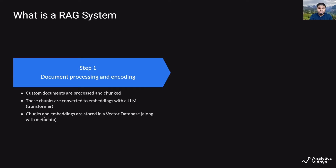These chunks and their corresponding embeddings or vectors are stored in a vector database along with other metadata, like the file name from where the document chunk is coming, the page number, and so on.